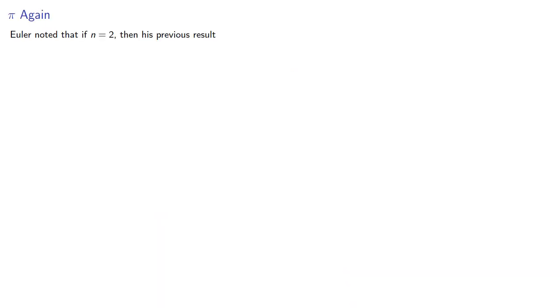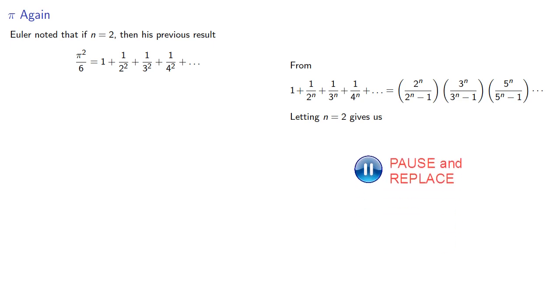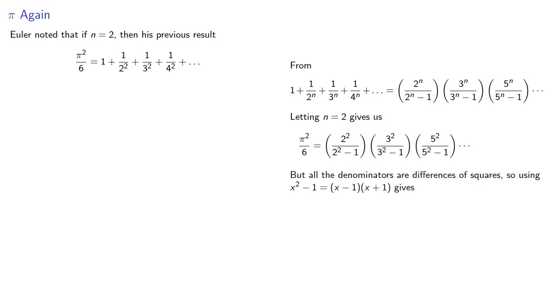Euler then noted that if n equals 2, then from his previous result that pi squared over 6 is the sum of the reciprocal squares, well that's really this formula where n is equal to 2. But note that all the denominators are differences of squares, so using our factorization for the differences of squares we find the expanded form.